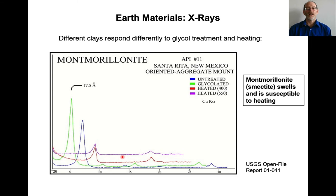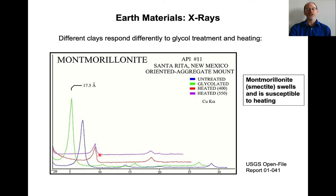And then there's montmorillonite, usually called smectite. That one does swell. So as you take the untreated blue peak and add ethylene glycol, it swells — a larger d-spacing gives you a smaller angle, so the peak moves. And it's also susceptible to heating, so the peak shifts over and gets much smaller.